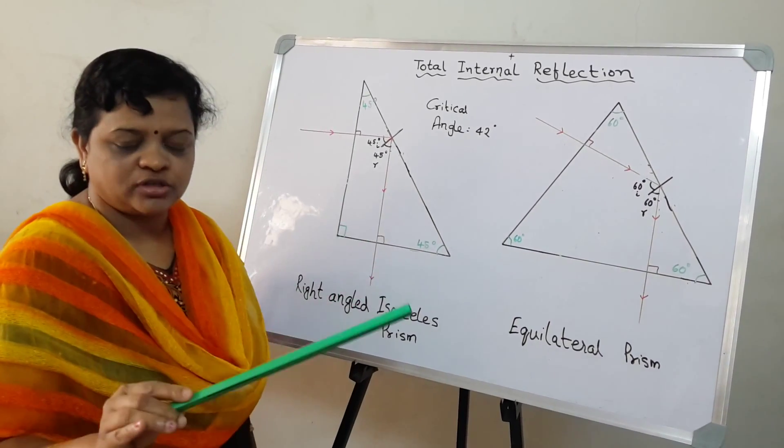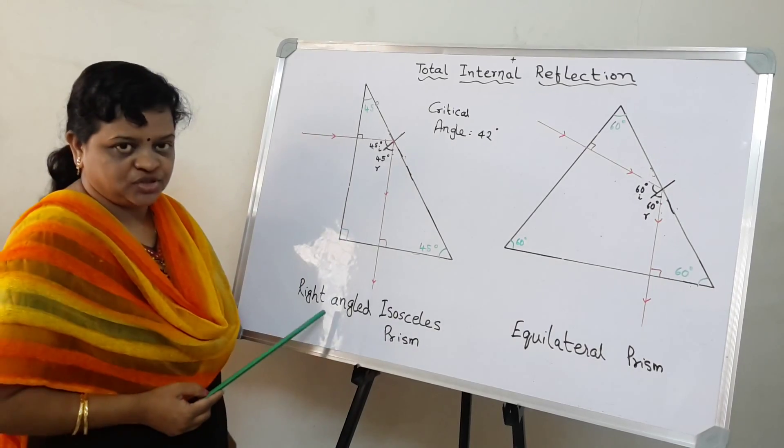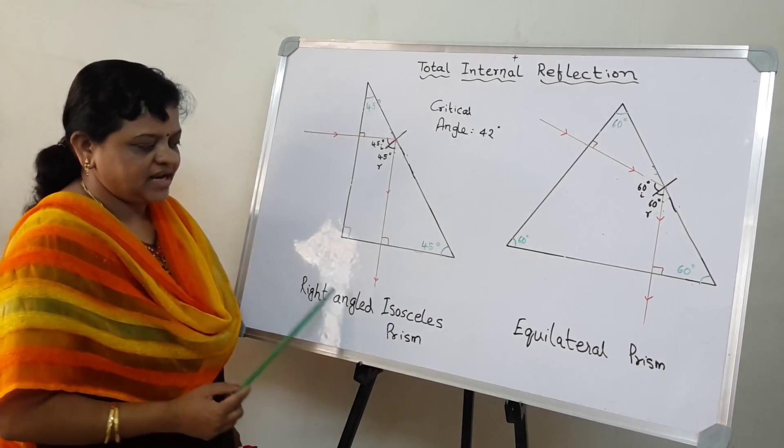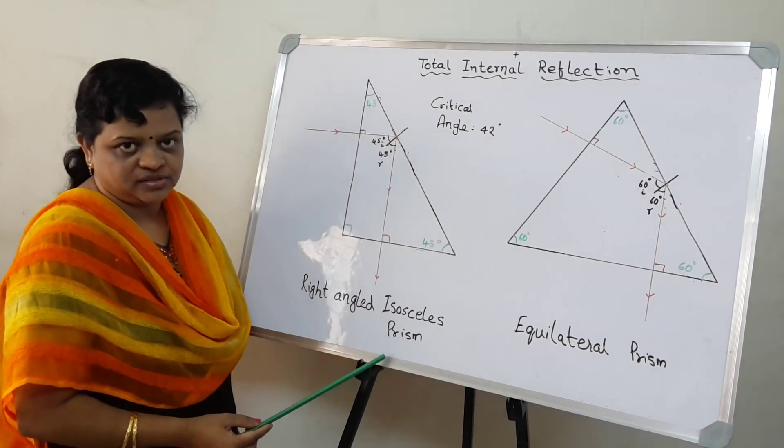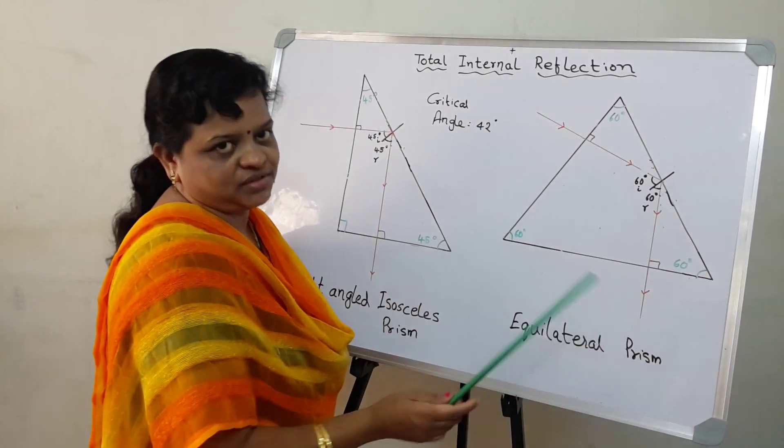The ones which are very important for you and in your syllabus. Now the first glass prism that you have is a right-angled isosceles prism, and the second glass prism is your equilateral prism.